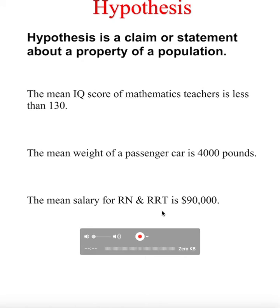Each of these statements can be true, false, a little higher, or a little lower. In order to figure those out, we use hypothesis testing. Of course, we have two grounds of hypothesis: the null and the alternative. In the next video, we're going to talk about what is null and what is alternative hypothesis.